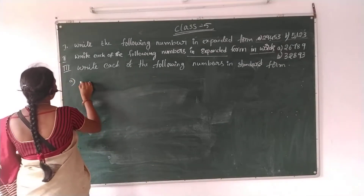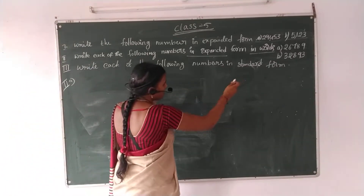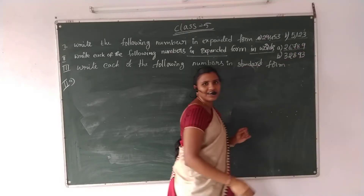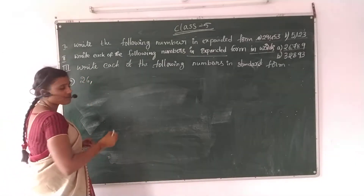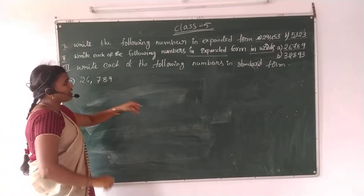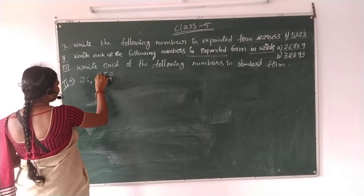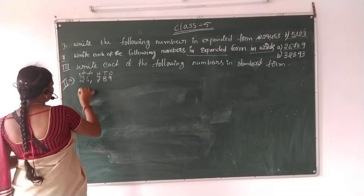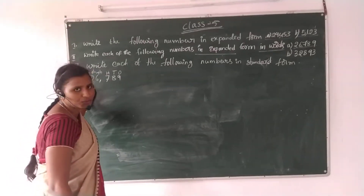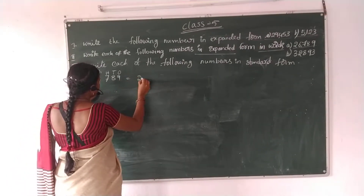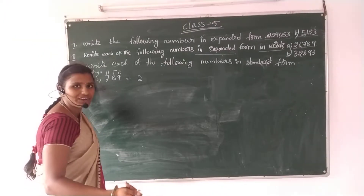A: the number is 26,789. Expanded form, inverse. Place values: 1s, 10s, 100s, 1,000s, 10,000s. Come to the left side first — the number is 2, place value is 10,000. So 2 into 10,000 equals 20,000.